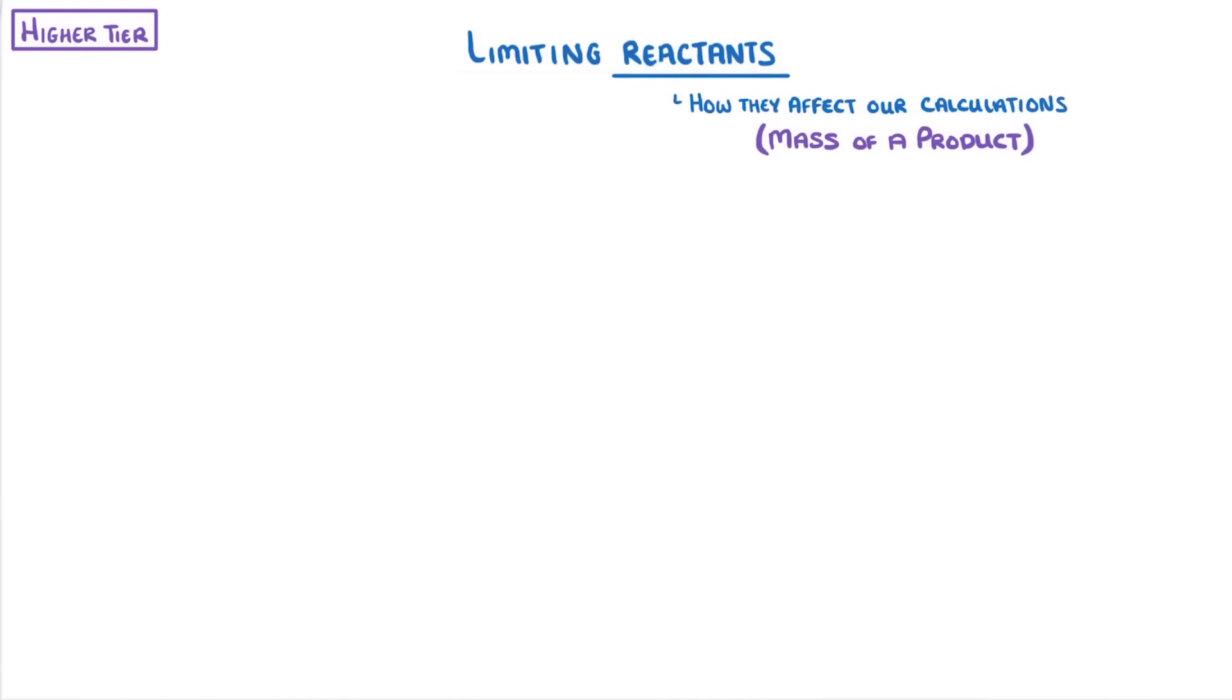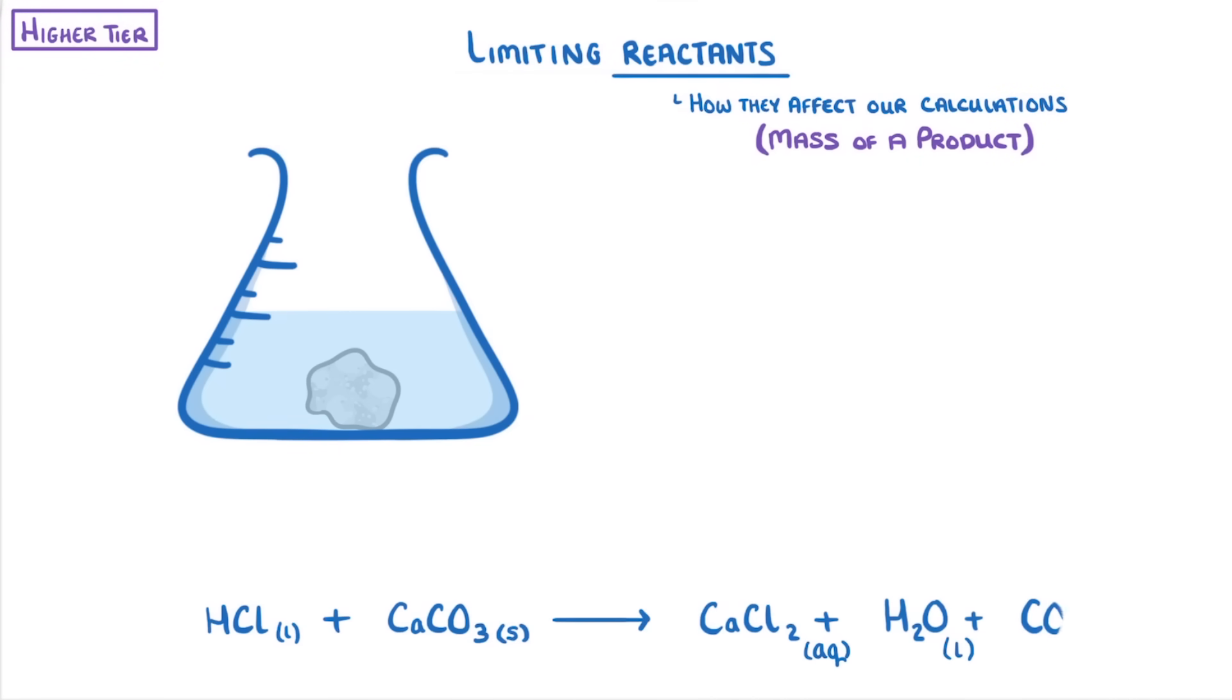To see what a limiting reactant is, let's imagine that we had a beaker of hydrochloric acid and we dropped in some calcium carbonate. As the hydrochloric acid and calcium carbonate react, they will produce calcium chloride, water, and carbon dioxide.